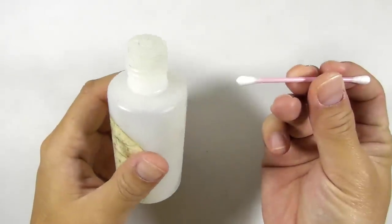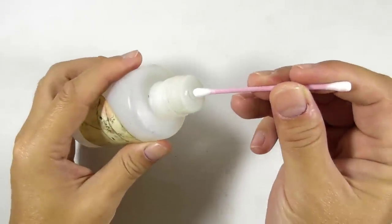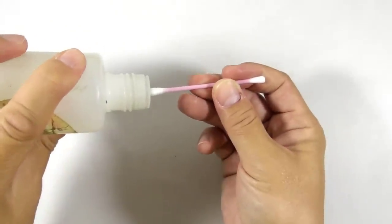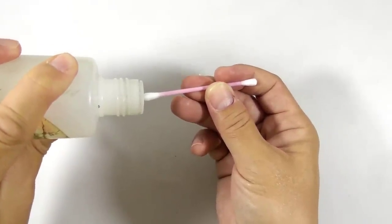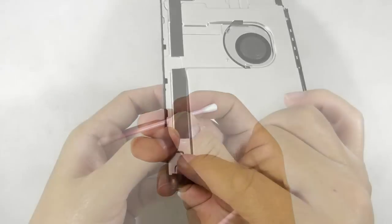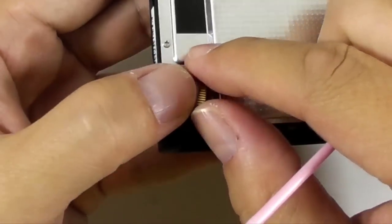Now take the isopropyl alcohol and wet the cotton swab with it. Then rub the contact pins several times.